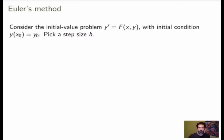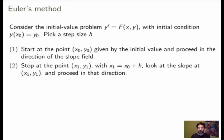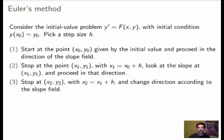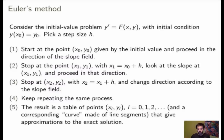Let me summarize in a more general setting. Consider an initial value problem with an arbitrary first-order differential equation and initial condition (x₀, y₀). You choose a step size h — in this case we had h = 1, but you may want something like h = 0.1. Start at (x₀, y₀), proceed in the direction of the tangent line from the slope field, stop at (x₁, y₁) where x₁ = x₀ + h, look at the new slope, proceed in the new direction, stop at (x₂, y₂), and keep going as long as you'd like. This gives you a table of points (xᵢ, yᵢ) and a corresponding curve of short line segments — a numerical approximation to the exact solution.